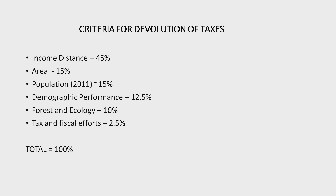The next criterion is demographic performance. The terms of reference of the Commission required it to use the population data of 2011 while making recommendations. Accordingly, the Commission used 2011 population data. The demographic performance criterion has been used to reward efforts made by states in controlling their population. States with a lower fertility ratio will be scored higher on this criterion.